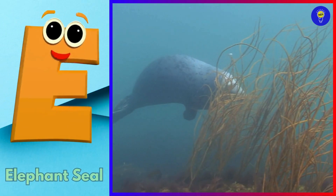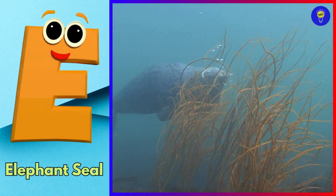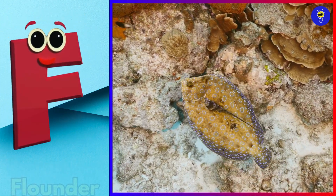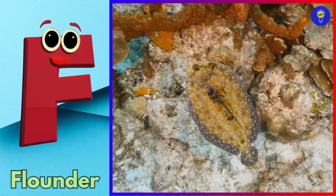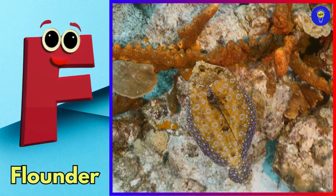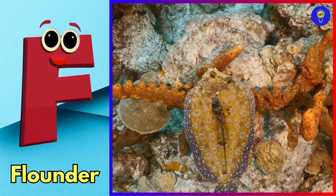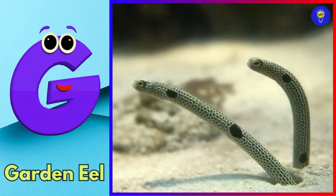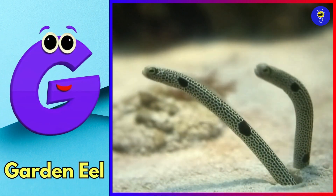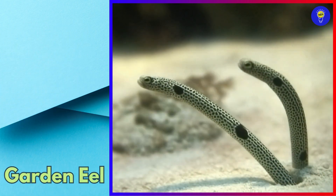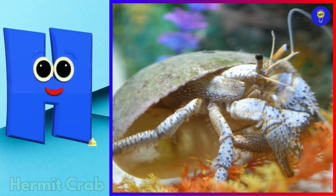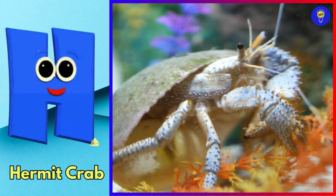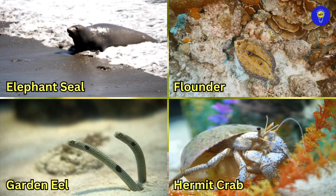E is for elephant seal. Elephant seal. F is for flounder. Flounder. G is for garden eel. Garden eel. H is for hermit crab. Hermit crab.